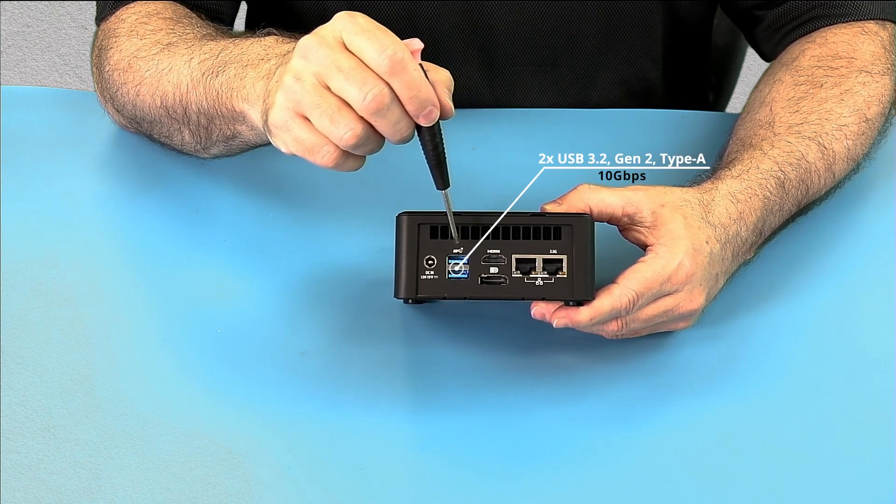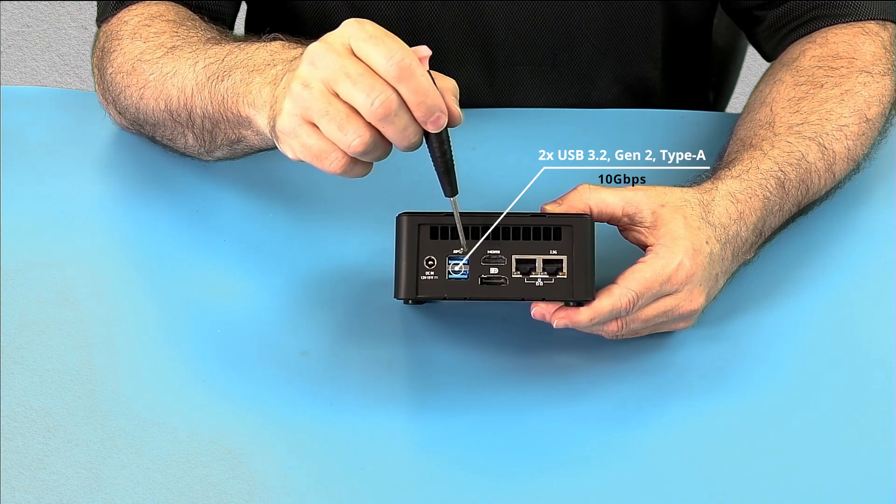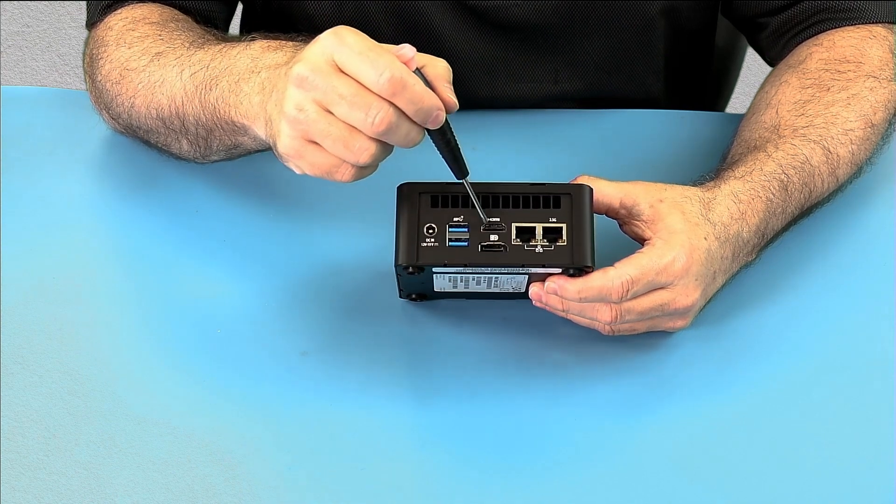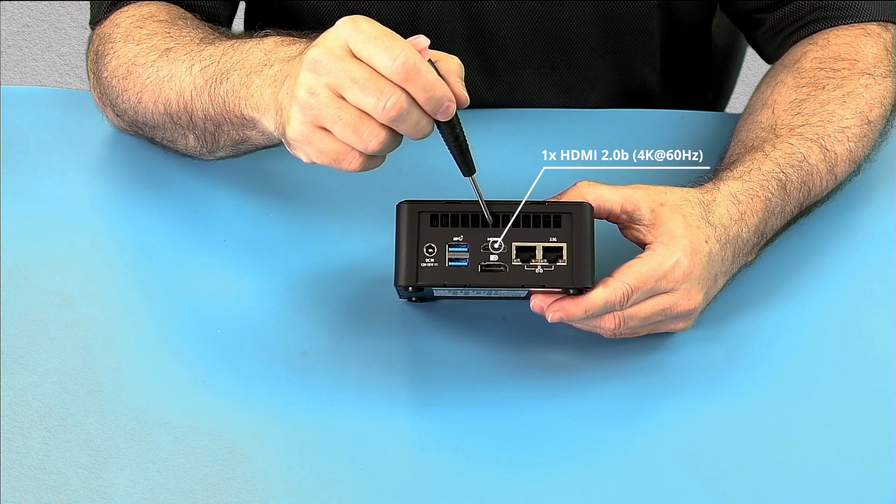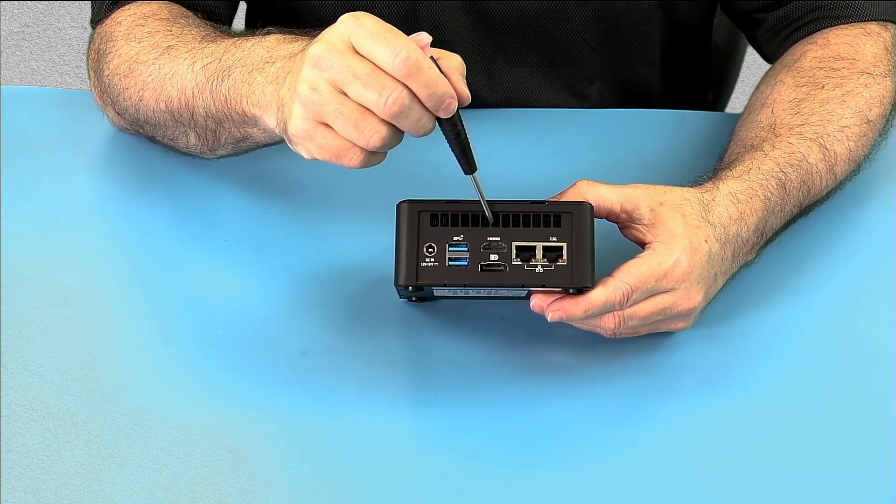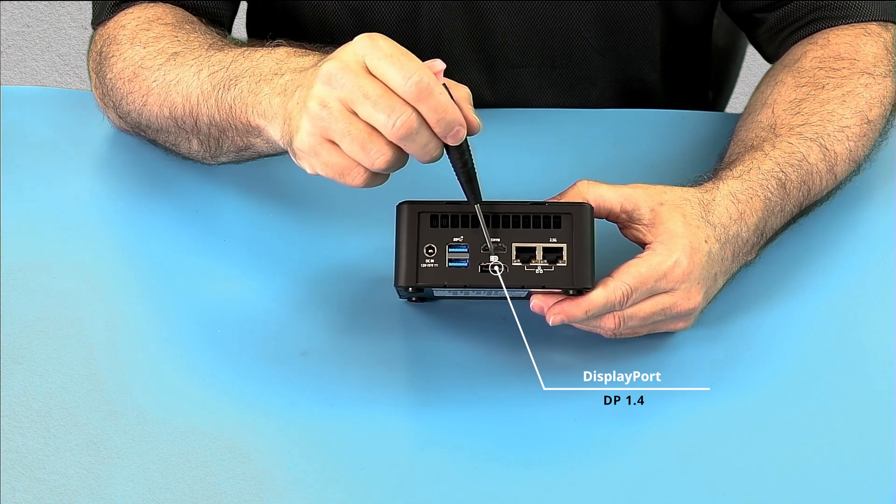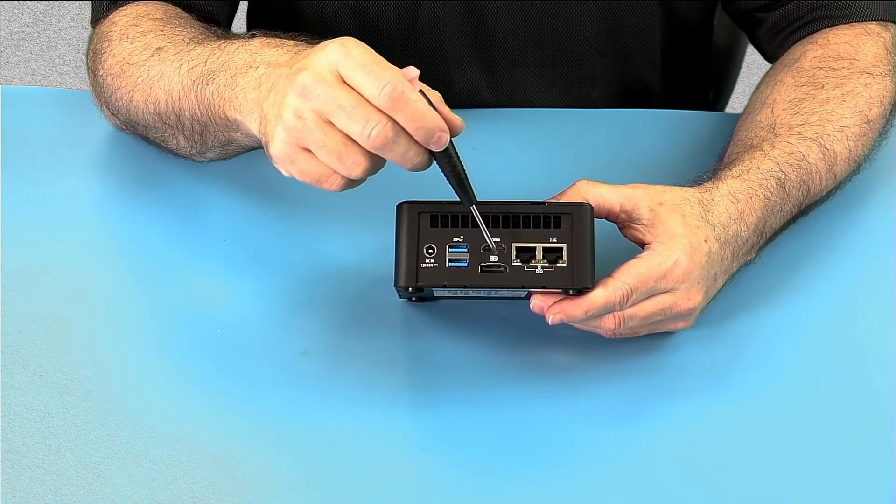We have two more USB 3.2 Gen 2, 10 gigabit Type-A ports. We have HDMI 2.0 B. This is 4k at 60 hertz. And we have a display port. And this is display port 1.4 as well as the two front ports are also display port 1.4.